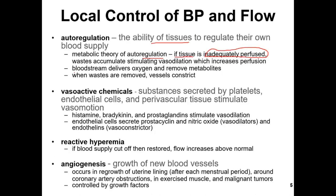The main function of the bloodstream is that it delivers oxygen and removes metabolites like lactate, CO2, potassium, sodium, and other things. When waste is removed, vessels can constrict. Our factors of autoregulation are about active chemicals — substances secreted by platelets, endothelial cells, and perivascular tissue that stimulate vasomotion. We know about histamine, bradykinin, and prostaglandins. These three things stimulate vasodilation.